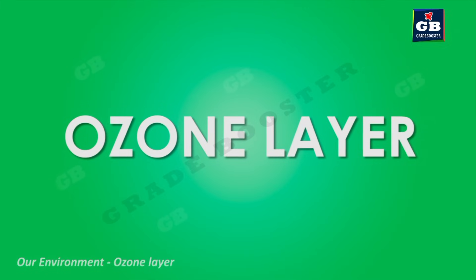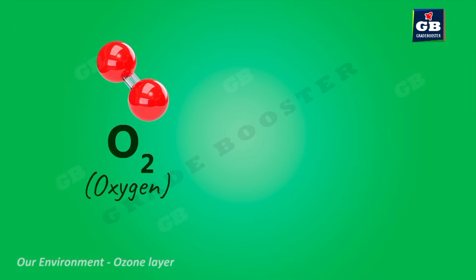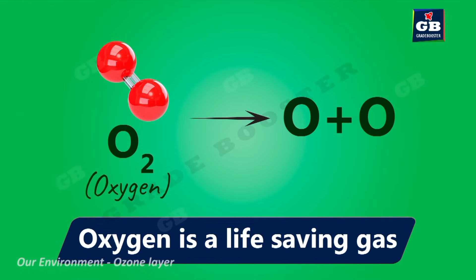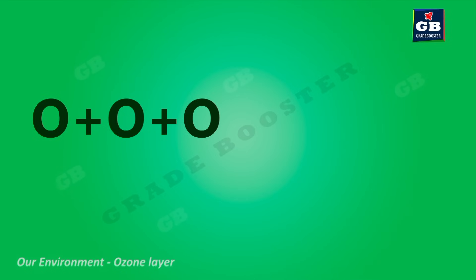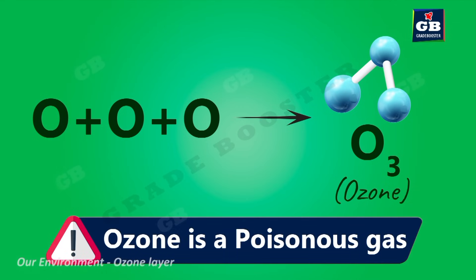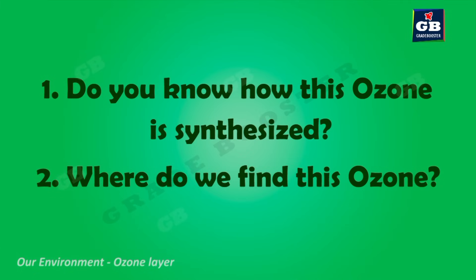The ozone layer: one molecule of oxygen is made of two oxygen atoms (O₂), which is vital for survival of all aerobic organisms. In some special circumstances, three atoms of oxygen combine to form a molecule called ozone, with chemical formula O₃. Oxygen is a life-giving gas, whereas ozone is a poisonous gas.